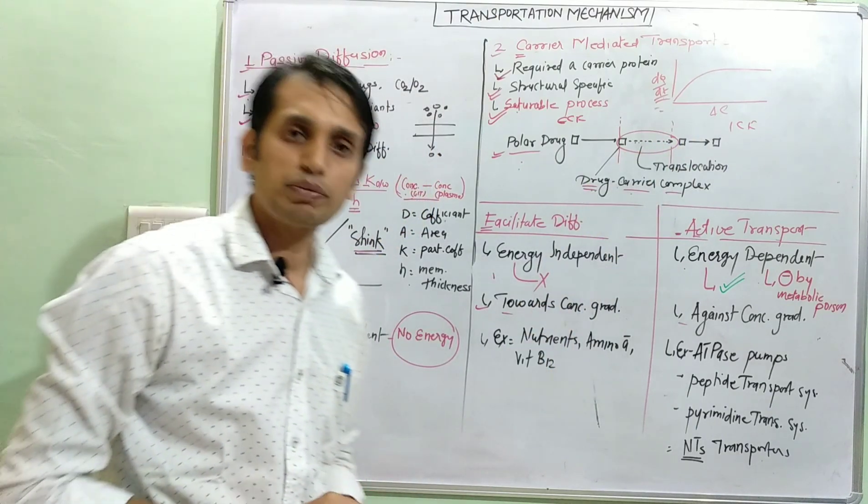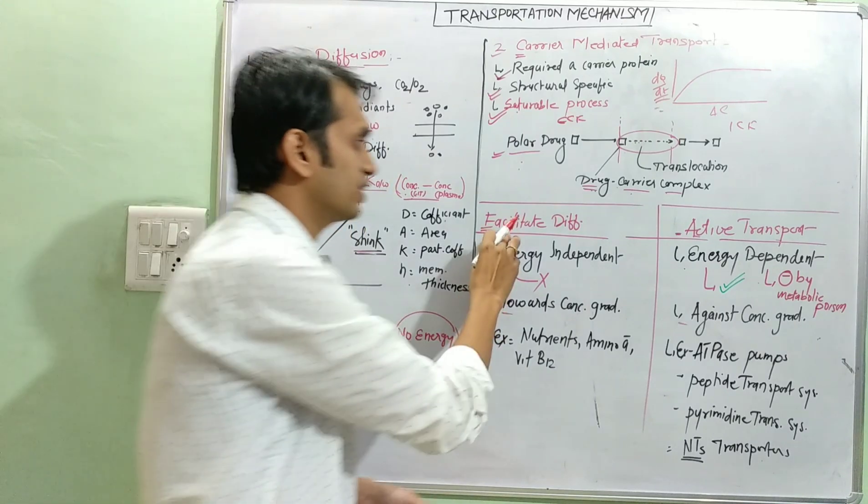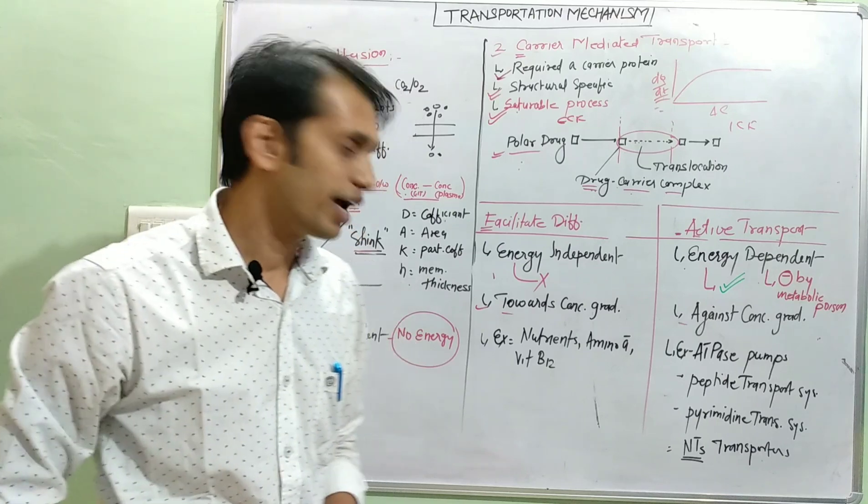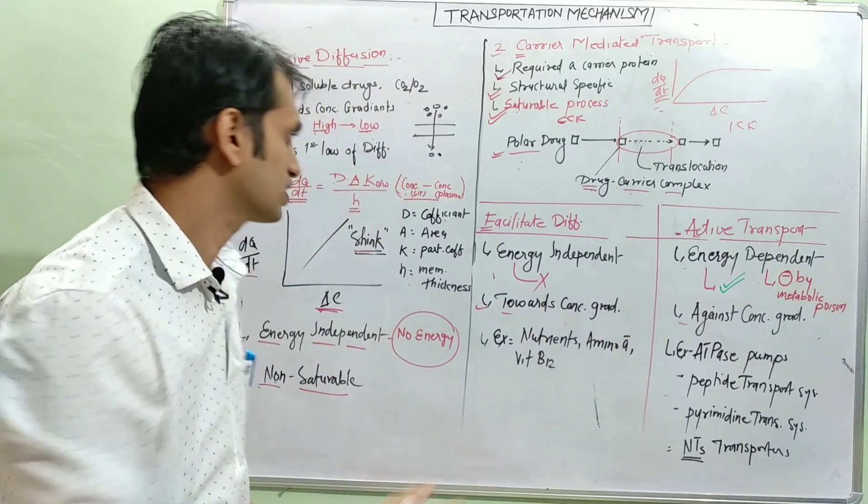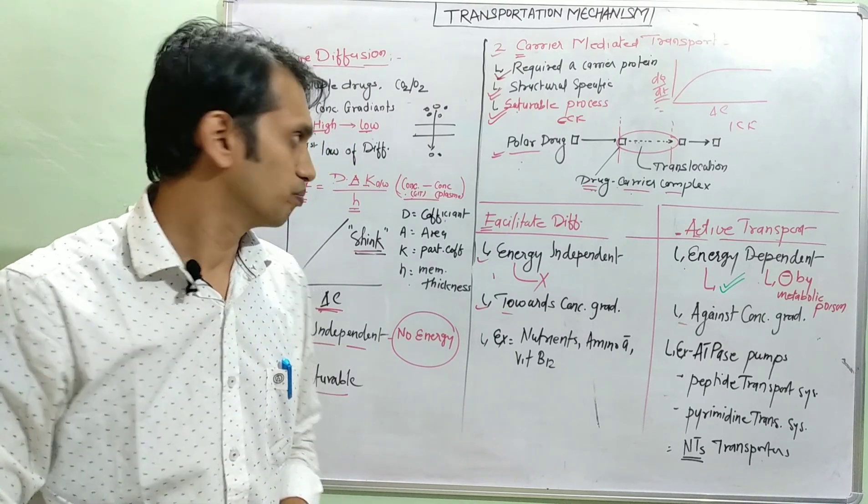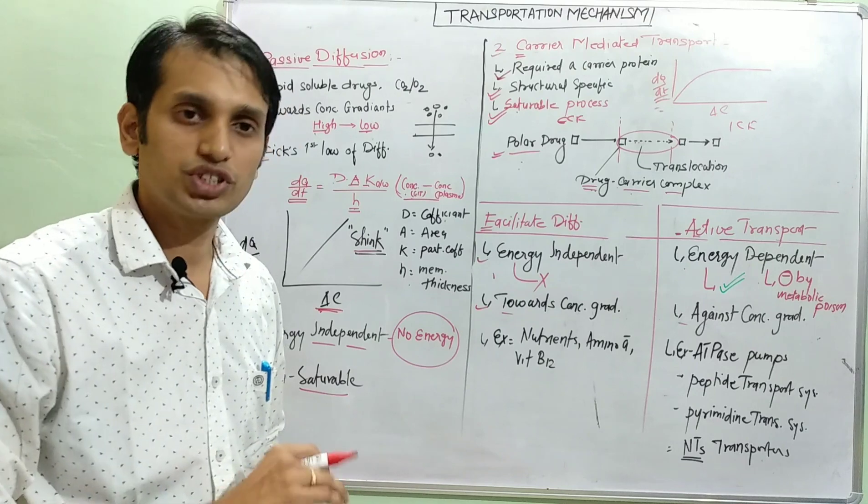And there are two types of carrier mediated transport system: first is the facilitated diffusion, and second is the active transport system. And basic differences are, first is it is an energy independent process, means facilitated diffusion requires no energy for transportation of a drug.